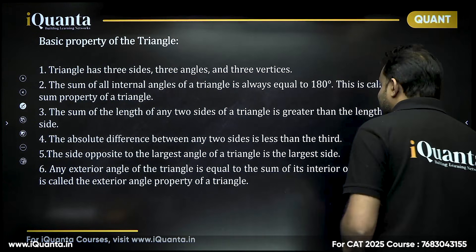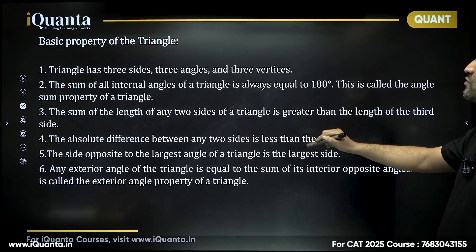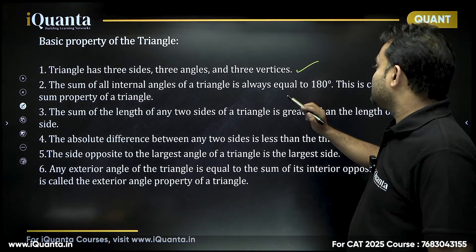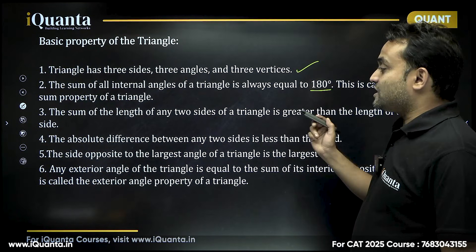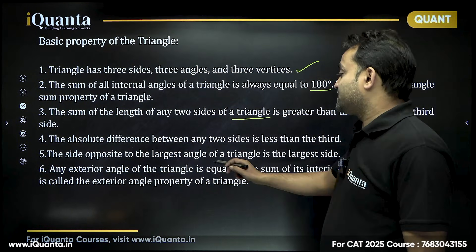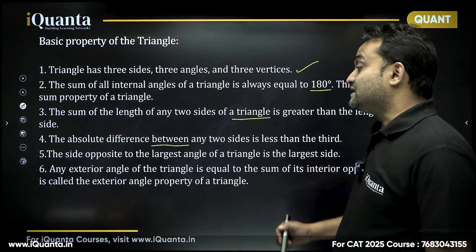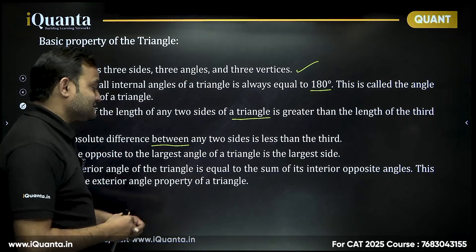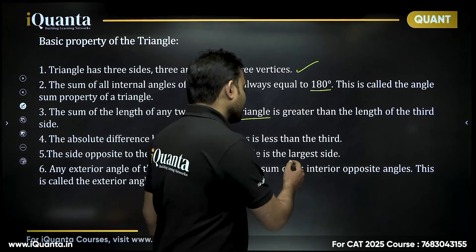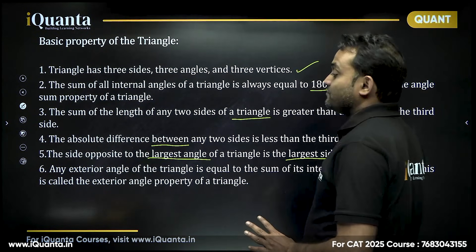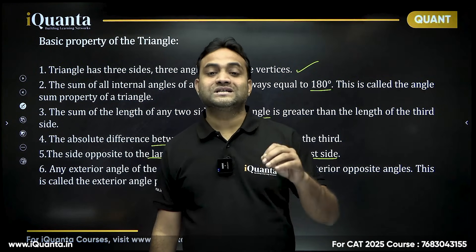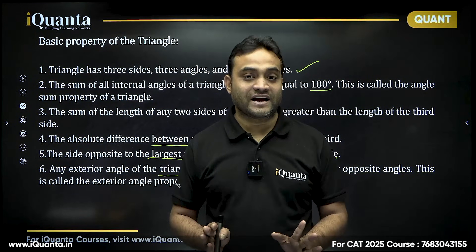To summarize the key points: (1) A triangle has three sides, angles, and vertices. (2) Sum of all interior angles is always 180 degrees. (3) Sum of any two sides is greater than the third side. (4) Difference between any two sides is less than the third side. (5) The side opposite the largest angle is the largest. (6) Any exterior angle equals the sum of its two opposite interior angles.